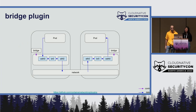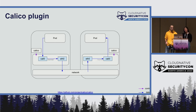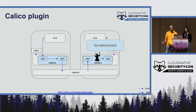Some examples: one of the first was the bridge plugin, a reference implementation from the container networking GitHub. It gets you basic connectivity between pods using virtual Ethernet devices and a Linux bridge, but there's no support for network policy whatsoever. There's another popular plugin called Calico, which also does the virtual interface thing but doesn't bother with bridges. It does add support for network policy using IP tables.